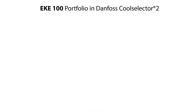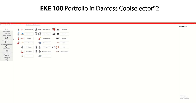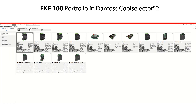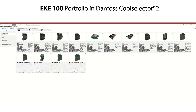You can also find and select online the suitable EKE100 variants and related information by using the Danfoss CoolSelector 2 online selection software. Open the software and follow the sequences shown here. Select electronic controls from the menu, then select superheat controllers and valve drivers. Here you see listed the available EKE type controllers including the EKE100 variants with technical specifications. From here you can also select available documentation and visuals.